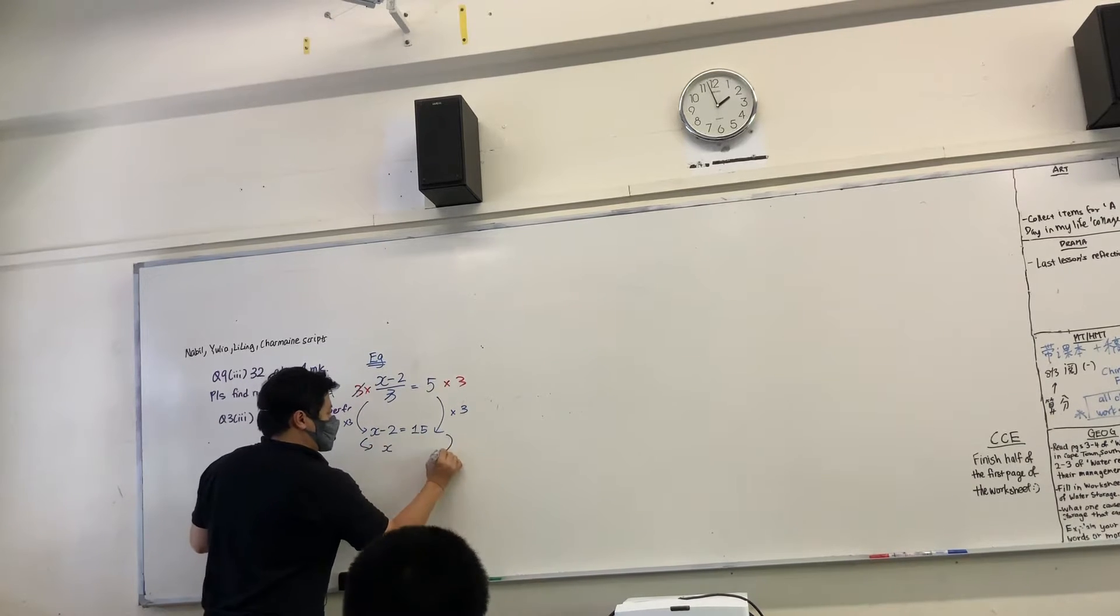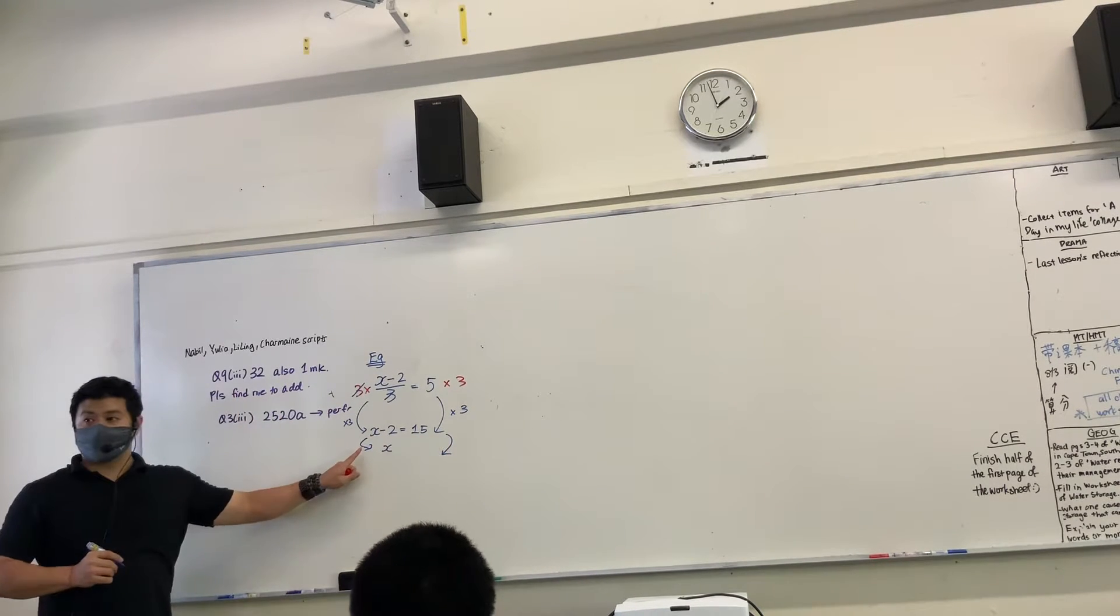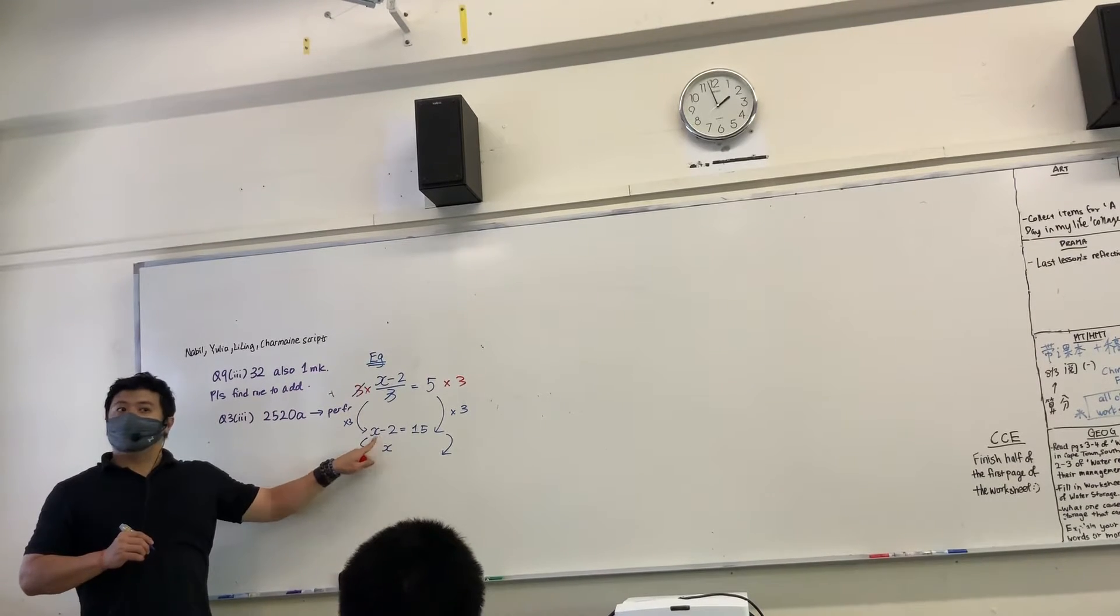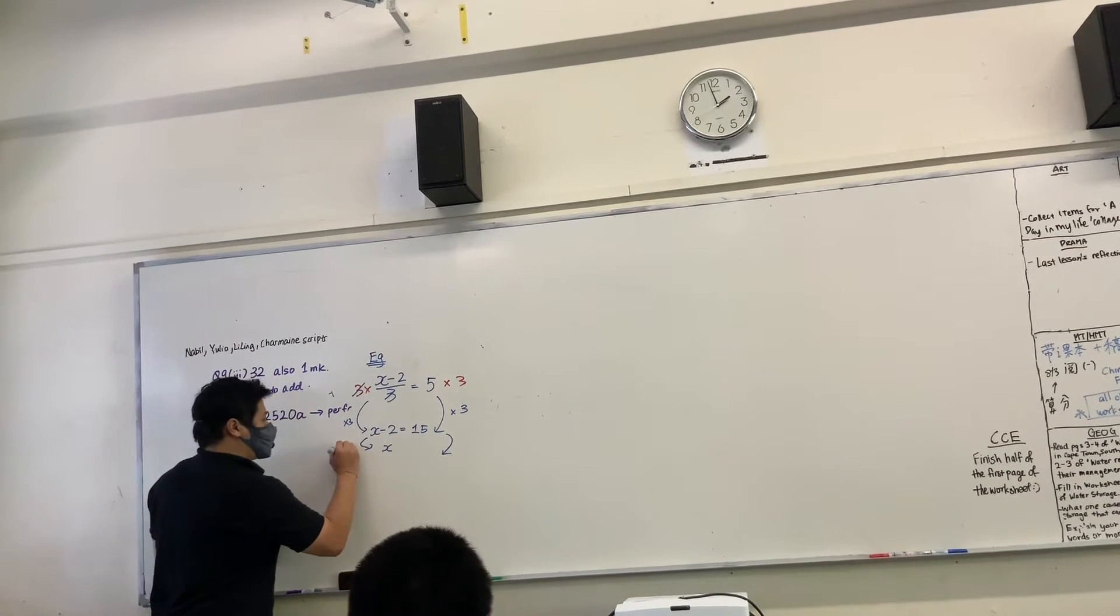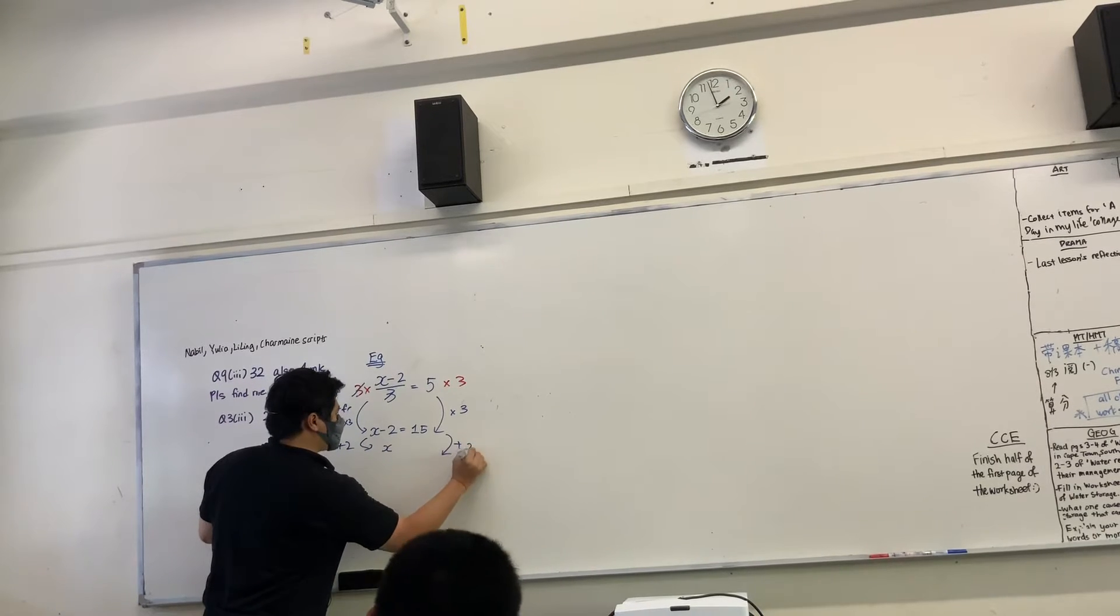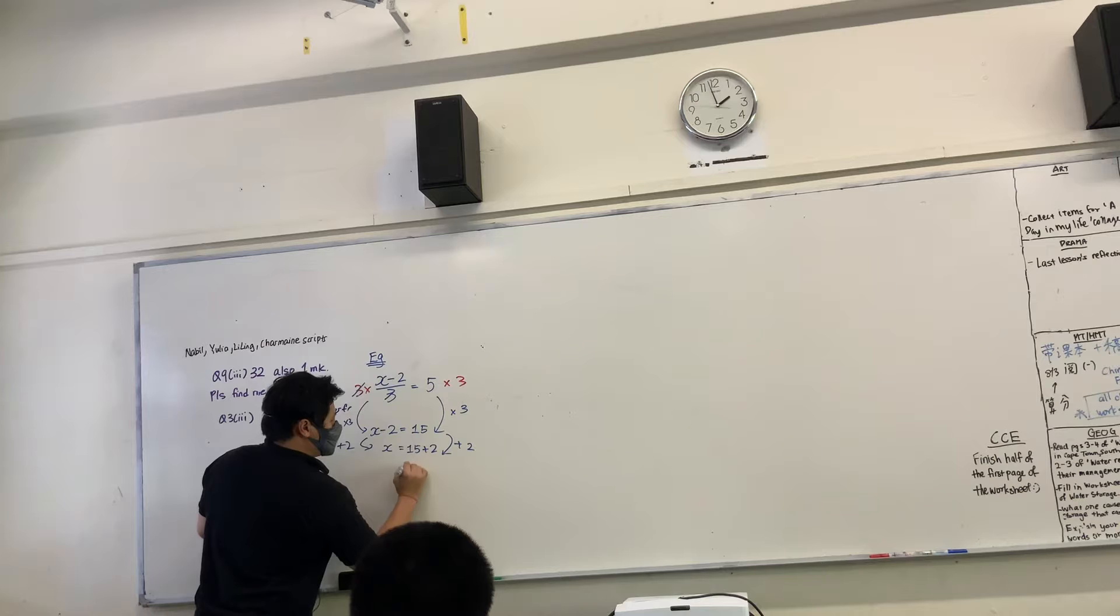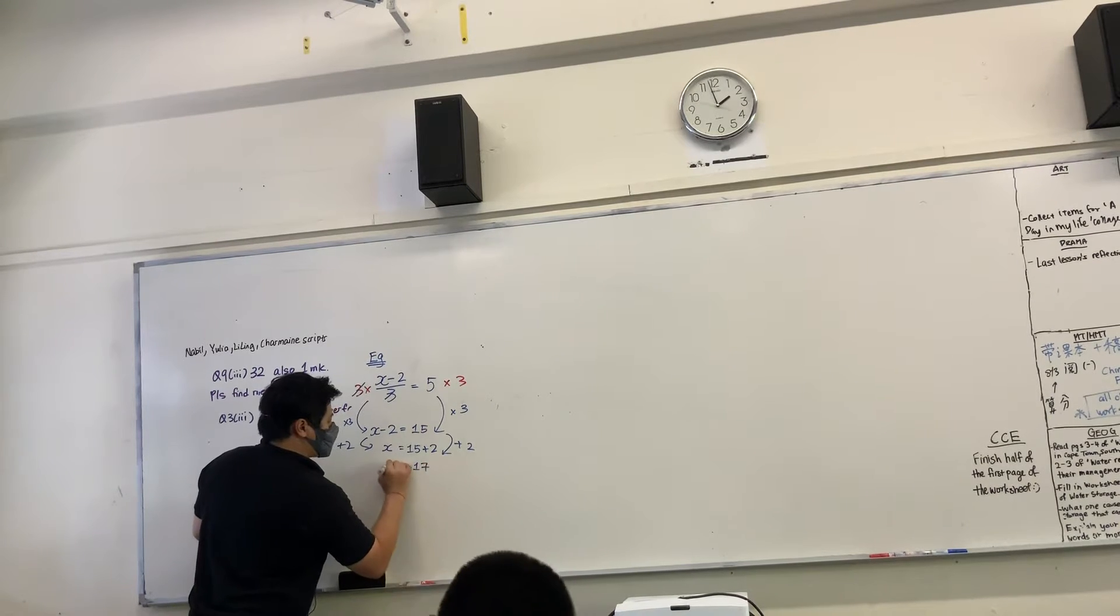After that, what do I do to both sides? I want to make x as the subject. I see a minus 2 here, right? What do I do? I do a plus 2 to both sides. This will give me 15 plus 2, so that gives me x equals 17. Is that okay?